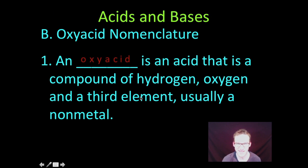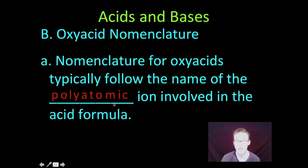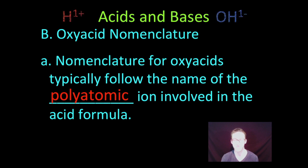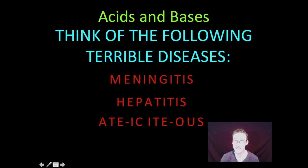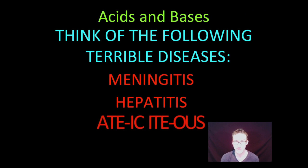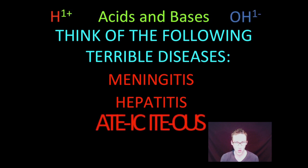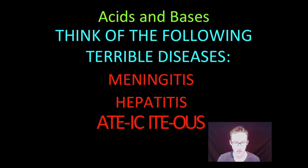Okay, second thing to tackle is this idea of oxyacid and oxyacid nomenclature. It is an acid that is a compound of hydrogen, of course, because by definition, our acids are something that will donate a proton, donate a hydrogen ion into solution. But now we're going to have oxygen and a third element, usually a non-metal. And typically, that oxygen and third element make up a polyatomic ion. So, the nomenclature for oxyacids typically follow the name of the polyatomic ion that's involved in the acid formula.